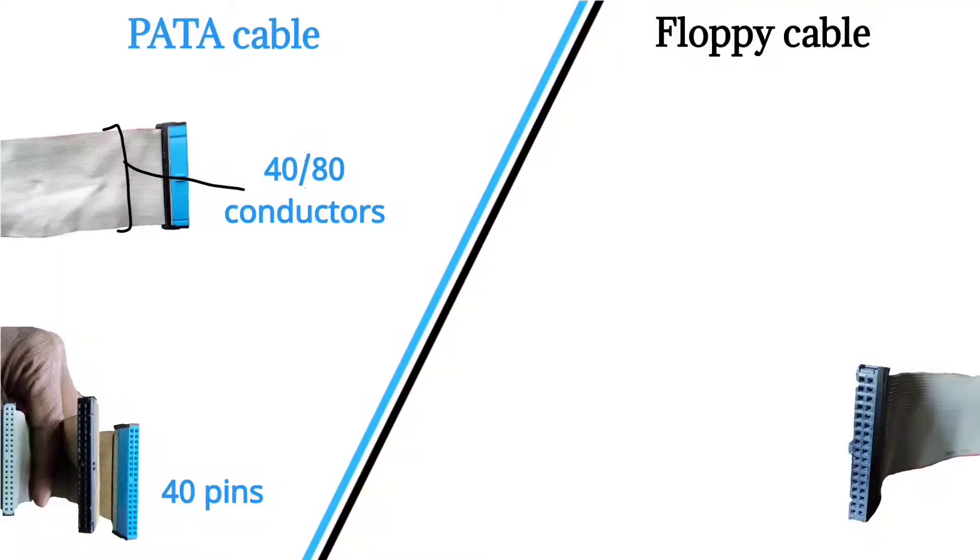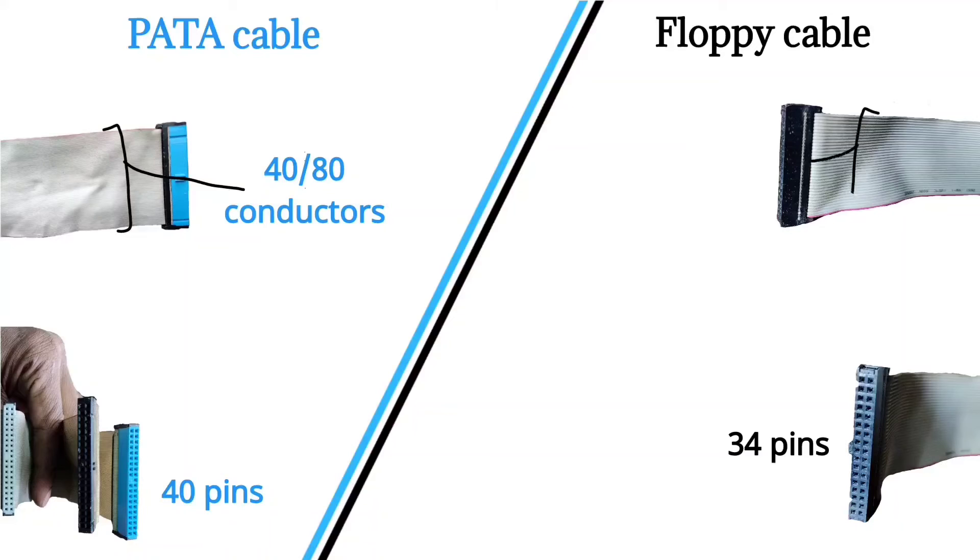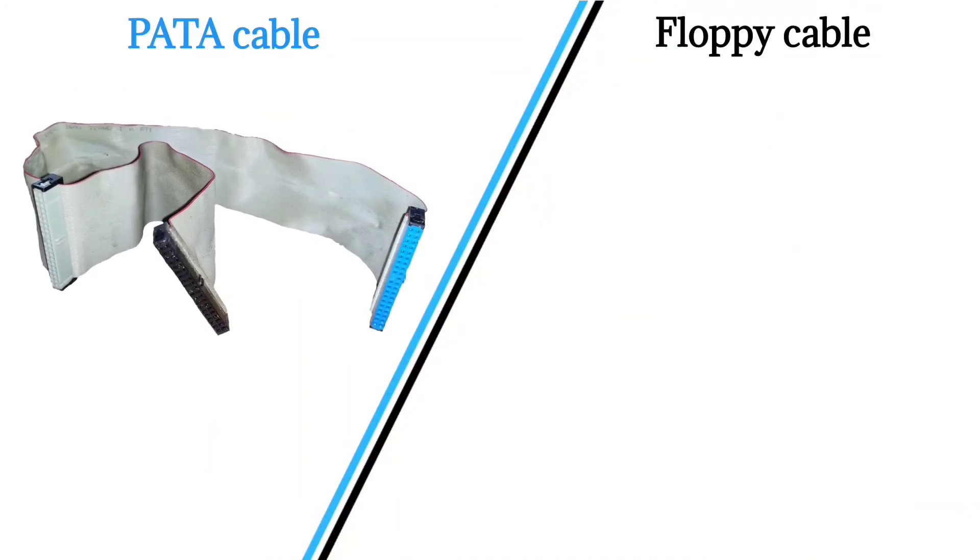Generally PATA cable has colored connectors, one in blue, one in white, and one in black. But floppy cable has only black connectors.